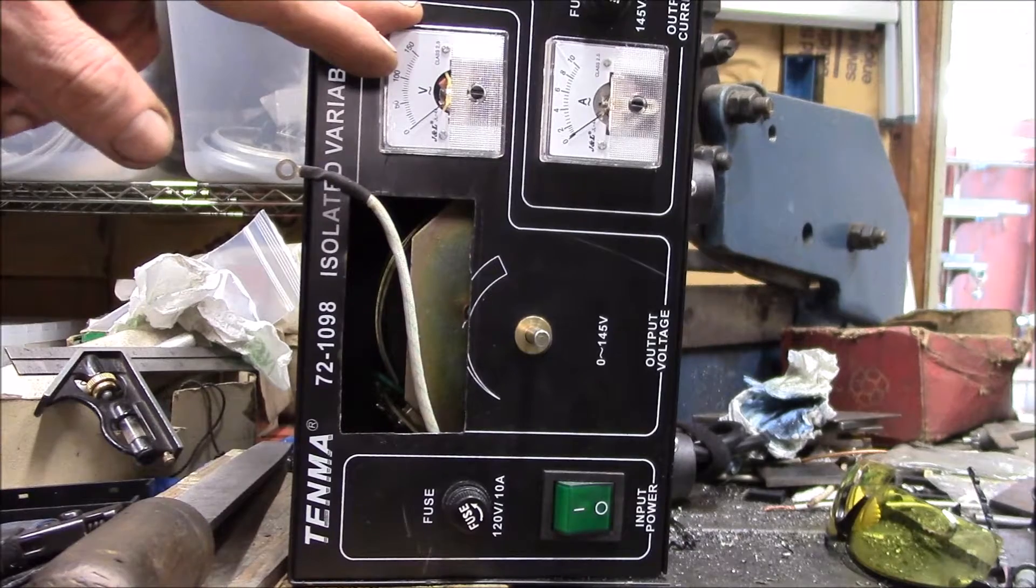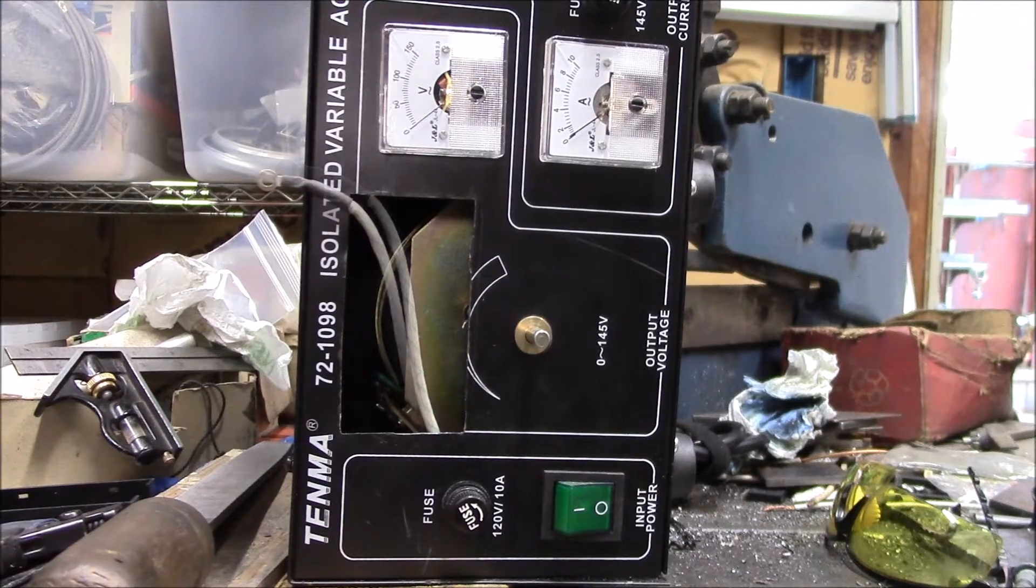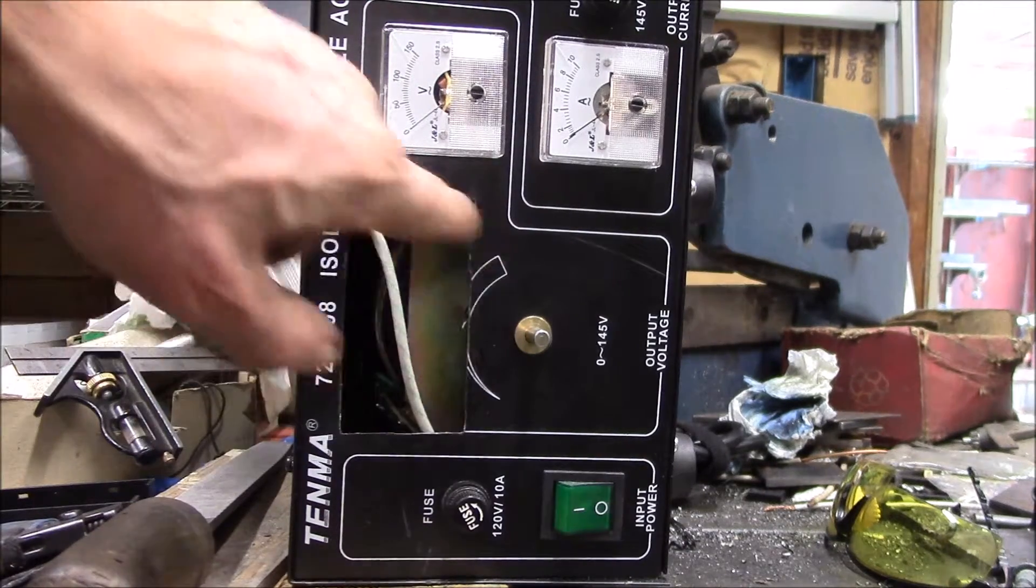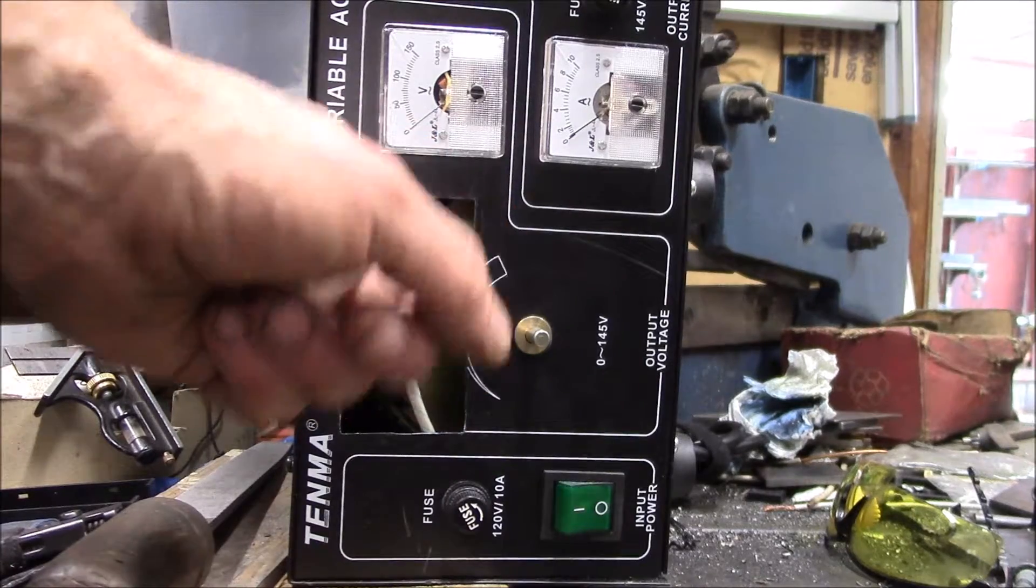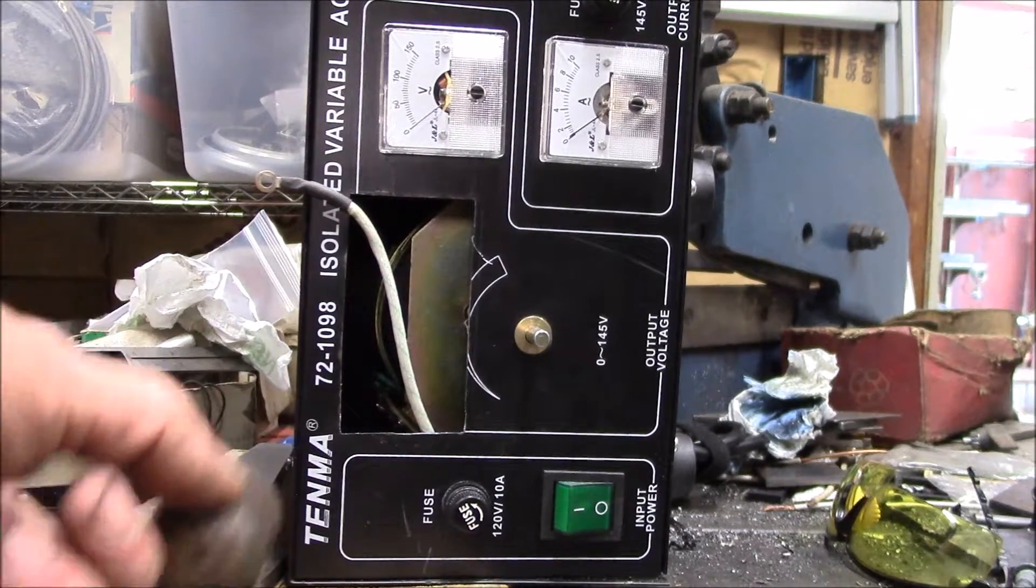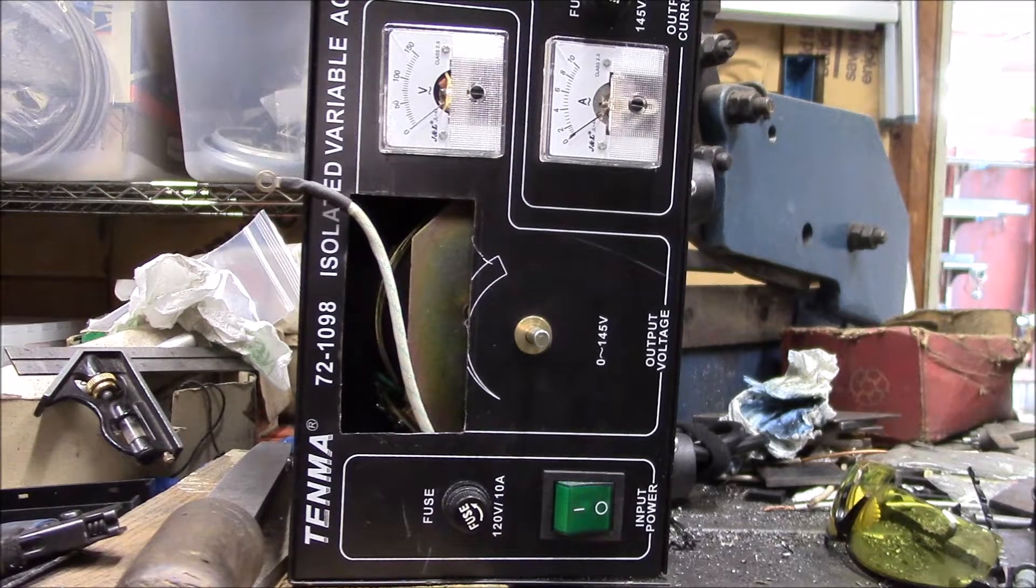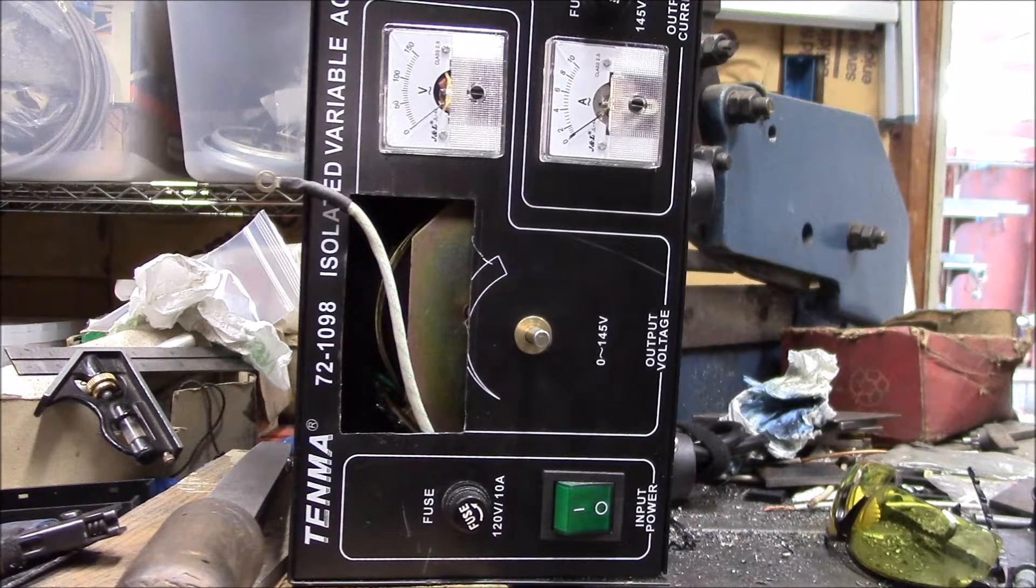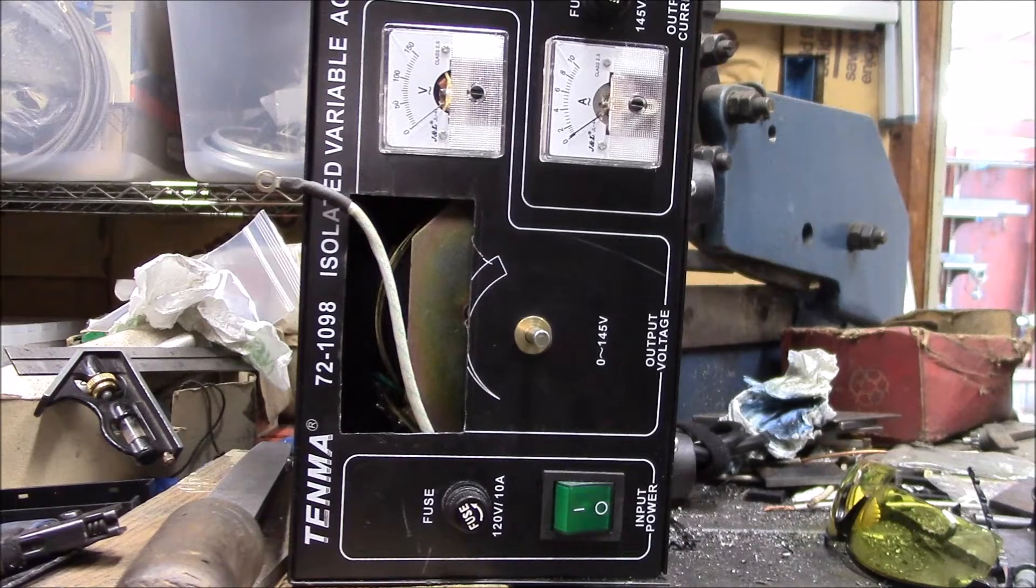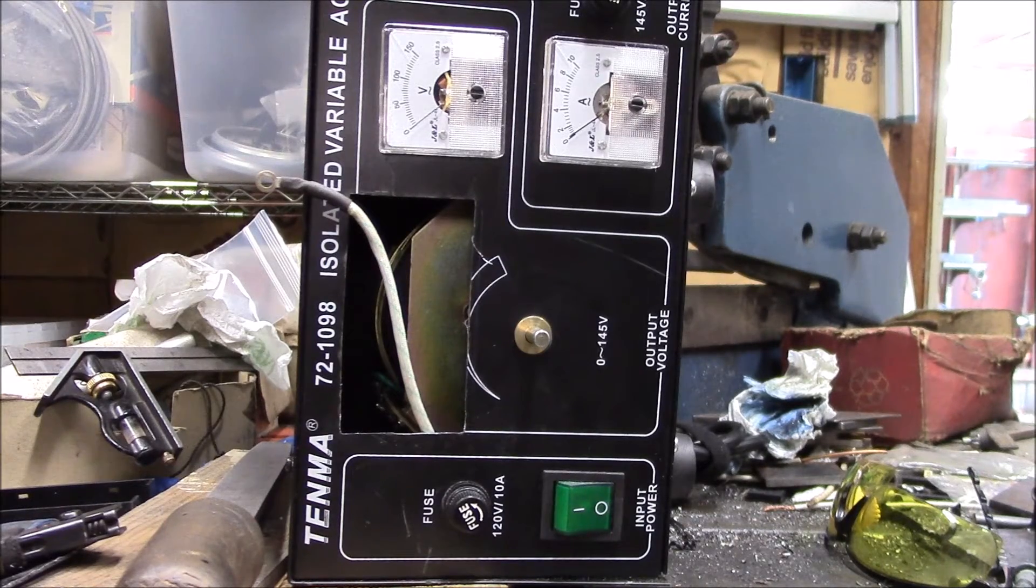There you go. Took about half an hour to cut this out and about another 15 minutes with the file to clean up the edges, get everything - all the corners square and the edges straight. It's ready to put together, so I'll show you what that looks like when I get to the wiring.